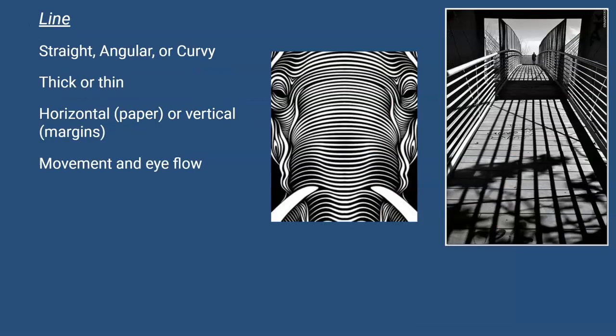We also have a line. Line can be used in several different ways, such as being straight, angled, curved, thick, or thin. They can also be horizontal, vertical, or they can be used to help with movement and the flow of the eye.